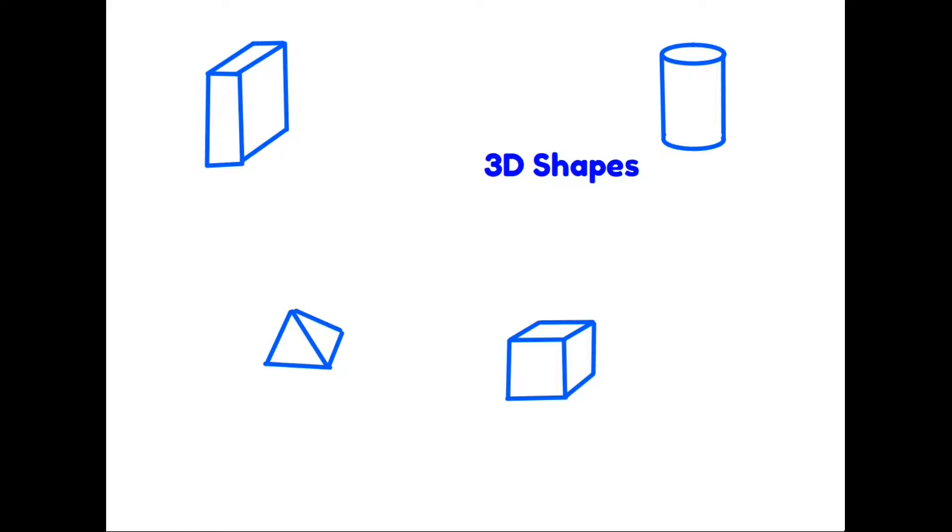First of all, we need to decide what the difference is between 2D and 3D shapes. Well, the word D stands for dimensional, and a 2D shape is something that is flat. If you're not sure about common 2D shapes, please do take a look at my video and I'll put a link to that at the end of this one. But a 3D or three-dimensional shape is a solid object. It is not flat. You can look at it from different directions.